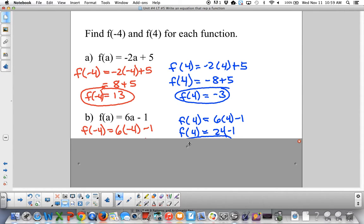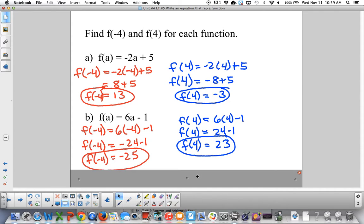So you plug in negative 4 for the red, 4 for the blue. And you should get negative 25 when you plug in negative 4. And you should get 23 when you plug in 4. So that's functional notation for an equation. You're just plugging in values for your x. Or in this case, for a.